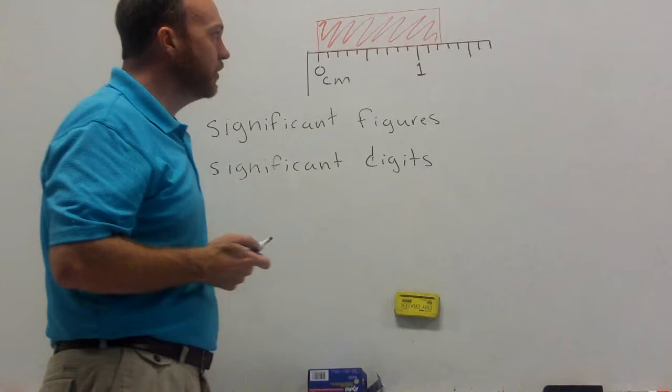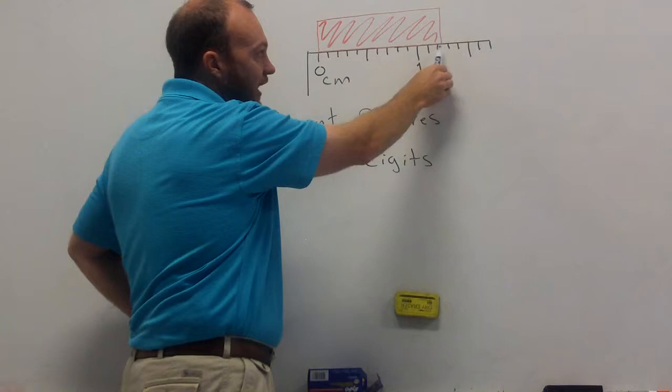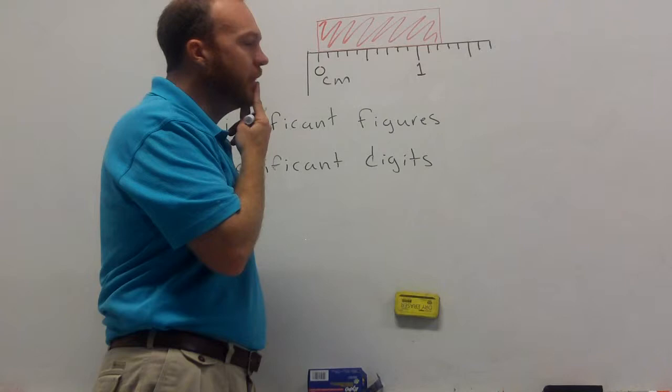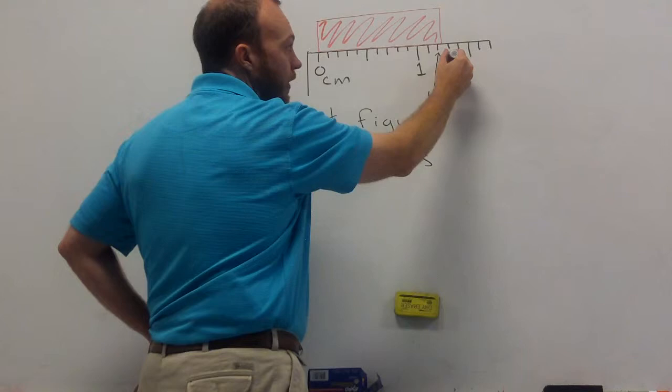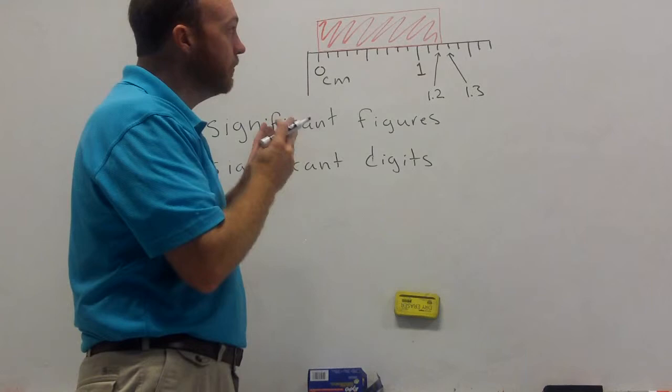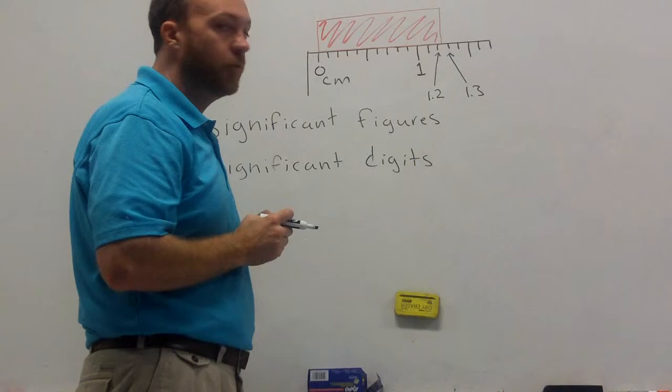Now, I want you to notice something about this. The end of our object does not fall exactly on one of these lines. It's kind of in between. So, let's think about what we know. We can tell by looking at the ruler that this object is longer than 1.2 centimeters, but it's shorter than 1.3 centimeters. We know it's somewhere in between 1.2 and 1.3.